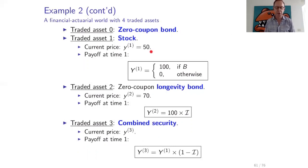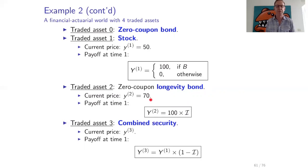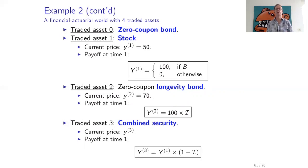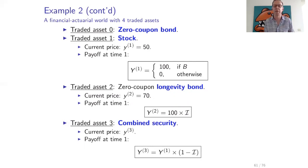The traded assets in this world are: asset zero, the zero coupon bond as described; asset one, a special stock with current price 50 whose payoff is 100 if the market is booming but zero otherwise — not realistic, but a simple example for easy calculations. Asset two is a zero coupon longevity bond with current price 70 and payoff at time one equal to 100 times the index. So if many people survive you get 100, and if few survive you get nothing.